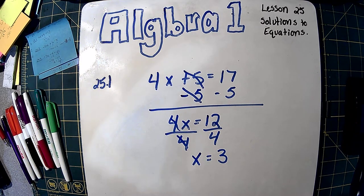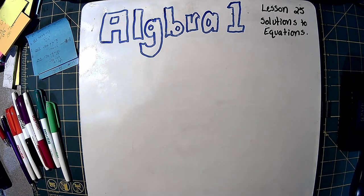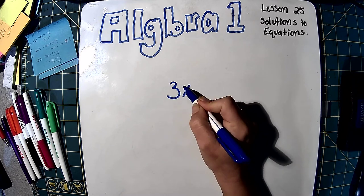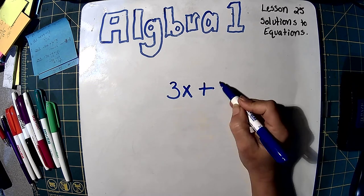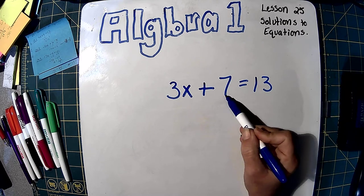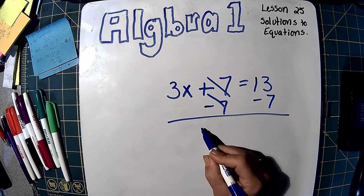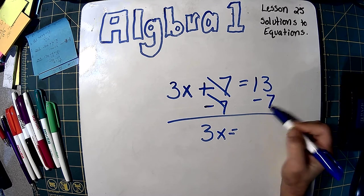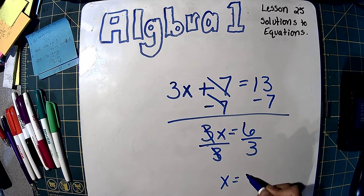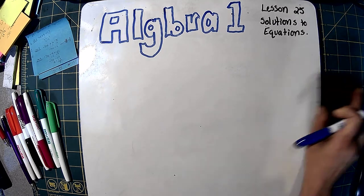We're doing the same thing — it's just in multiple steps. First, we get rid of addition and subtraction. Then we get rid of our multiplication or division. Let me do another one. Let's say we had 3x plus 7 equals 13. The first thing we have to do is get rid of this plus 7. The opposite of adding 7 is subtracting 7. We do that on both sides. These cancel and we're left with 3x equals 13 minus 7, which is 6. Now we divide by 3 and we get x equals 2.